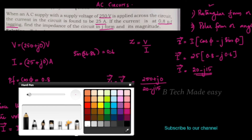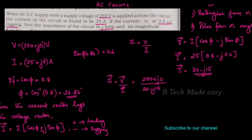We note that rectangular form is used only for addition and subtraction, while polar form is used for multiplication and division. Since we need to divide V by I, we will convert to polar form to perform the division.